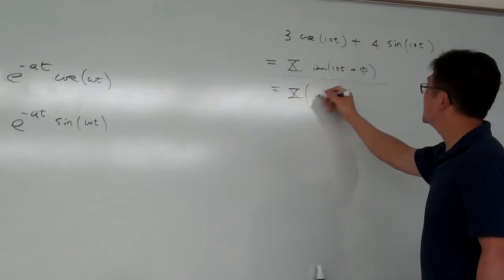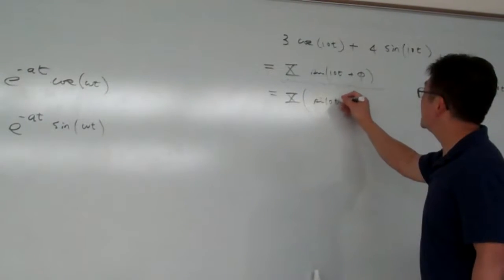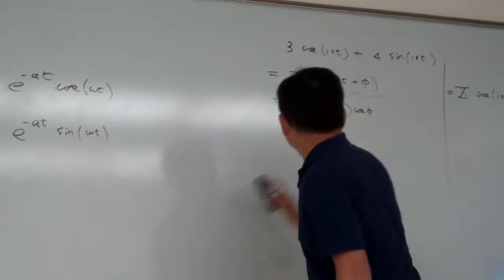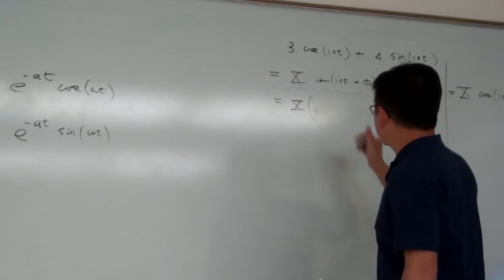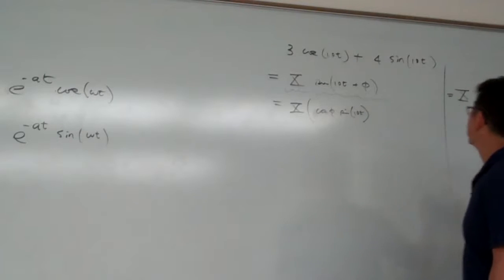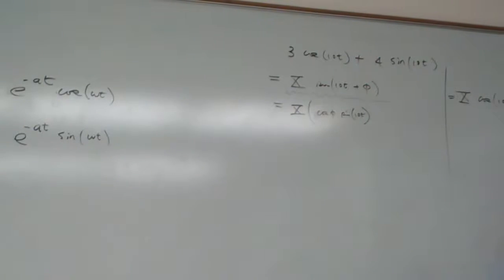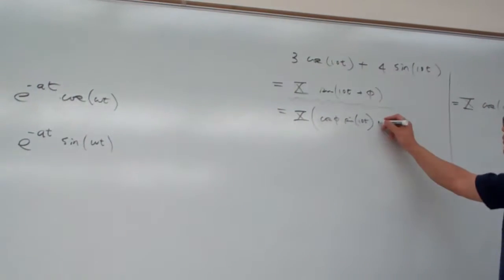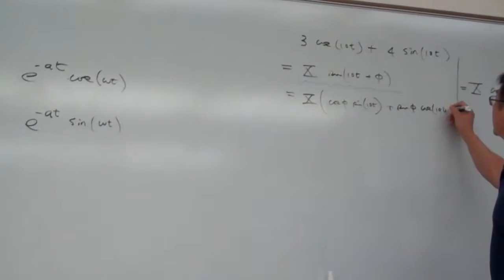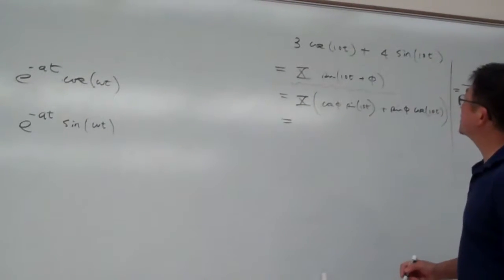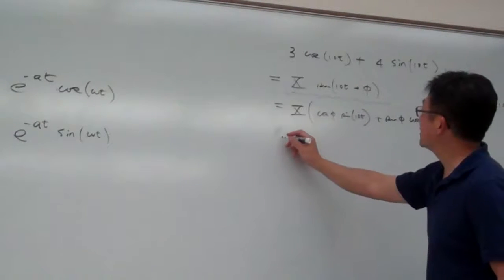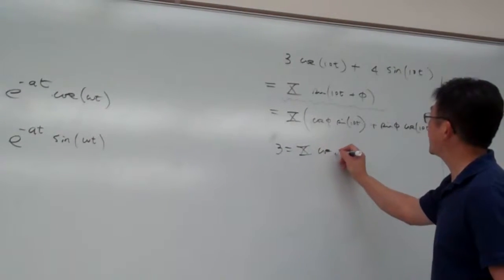You expand it: sine 10t is cosine phi times sine 10t, let me get the cosine phi in front — cosine phi, sine 10t — plus sine phi cosine 10t. So basically here, you expand it, you can see — compare the coefficient of sine — so therefore, 3 equals capital X times cosine phi.